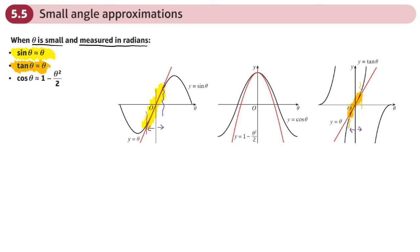This is useful. The last one: if we look at the graph of cos theta and the graph of 1 minus theta squared over 2 — a quadratic — in this little band here you could say they're pretty close together, almost identical. Further out, they diverge. So the last approximation is that cos theta can be approximated to 1 minus theta squared over 2.